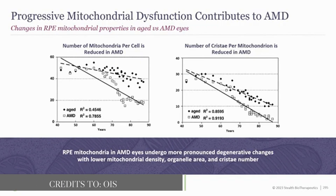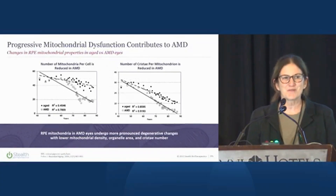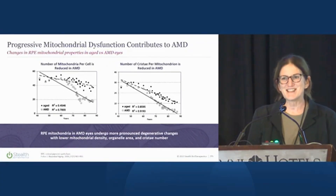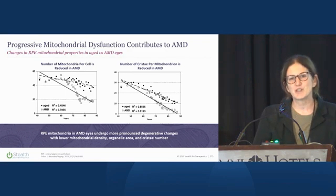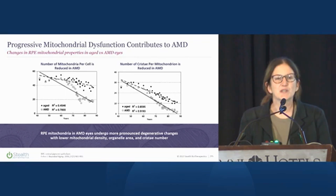Mitochondrial dysfunction is one of the earliest signs of dry age-related macular degeneration. We see a reduction in the number of mitochondria per cell relative to aged controls, a reduction in cristae architecture — which is really the business end of the mitochondria where energy is made — and increasing mutations in mitochondrial DNA.